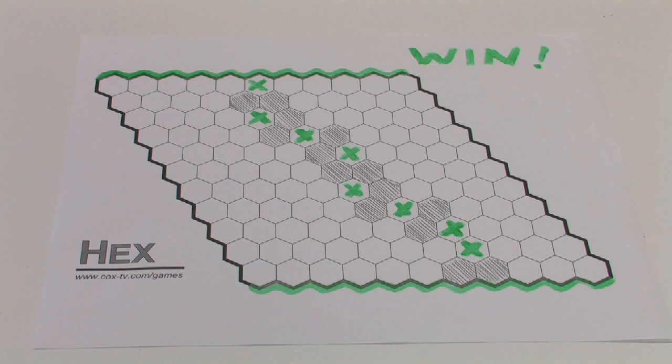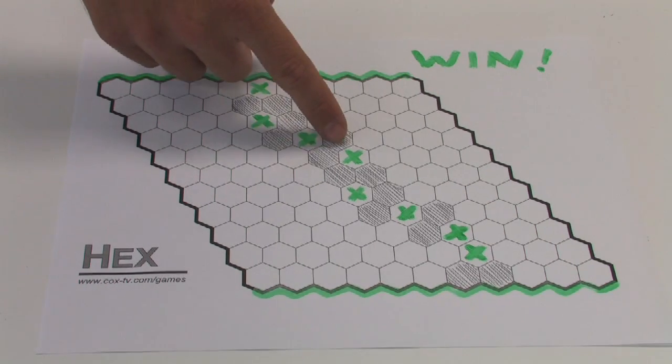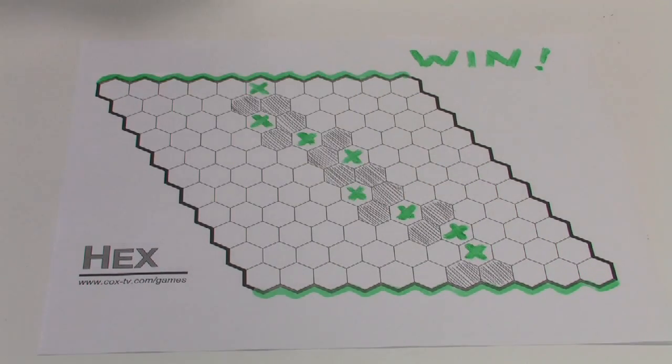If the green player can get this position, we call them bridges, then it's going to be a win no matter where the second player places his piece. The idea is that the shaded cells have to be open. And now a complete path can be made. It's impossible to block it.